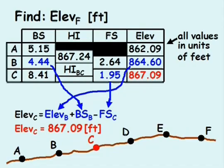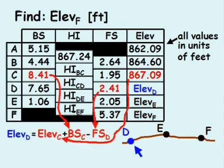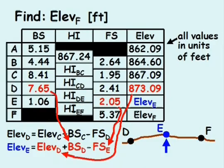We'll continue to use this equation to solve for the elevation at points D, E, and F. The elevation at point D equals the elevation at point C plus the backsight at point C minus the foresight at point D, which equals 873.09 feet. The elevation at point E is calculated the same way and equals 878.69 feet.